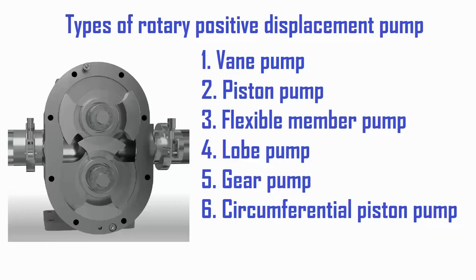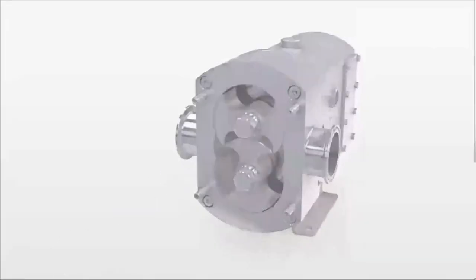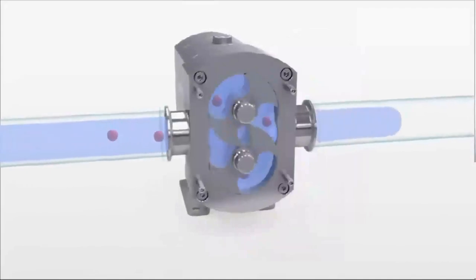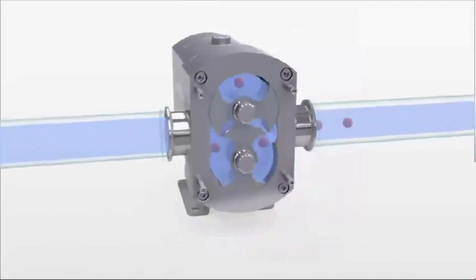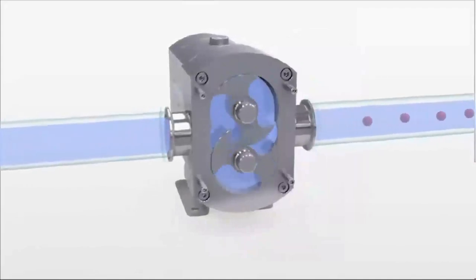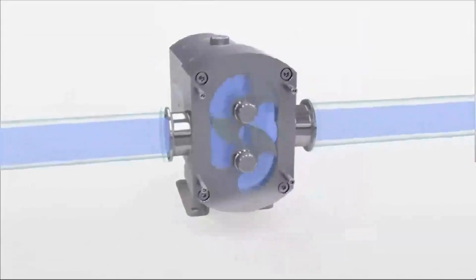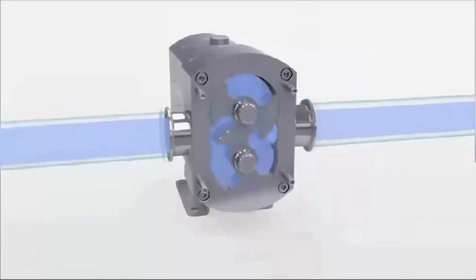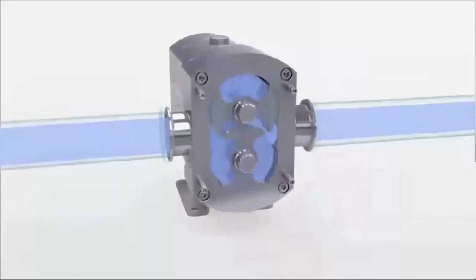The sixth type is the rotary circumferential piston pump. A circumferential piston pump is a pump that uses a pair of winged rotors rotating in the pump casing to move the fluid. The sucked fluid is pressed from the fluid inlet side to the fluid outlet side using the cavity between the winged rotors and the pump casing while the winged rotors rotate.